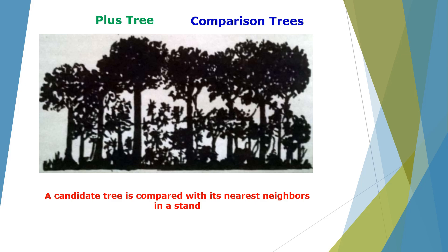In the picture, the taller tree on the left is your plus tree — the tree known to be better than all others on the site, which is clearly visible. The trees on the right-hand side are not bad either; they appear to be the same height and doing well under similar growing conditions — those are your comparison trees. You really want to compare your plus tree and candidate tree with the comparison trees before making a decision.